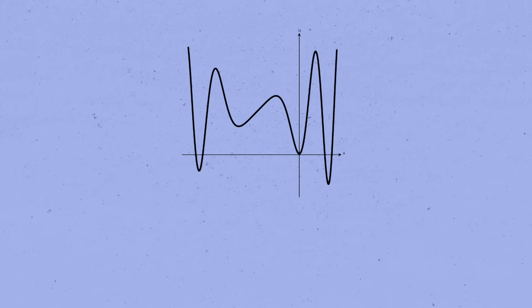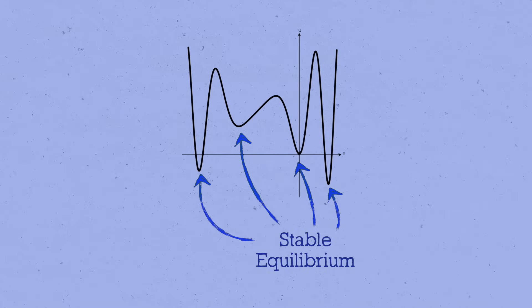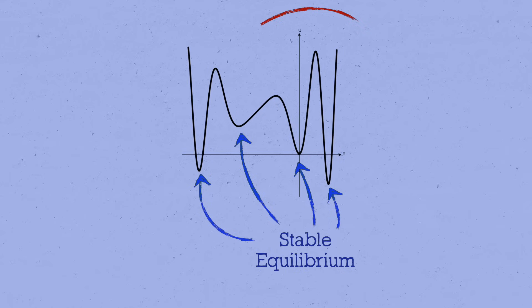Well, the first thing you should do when someone hands you a potential energy curve is to identify its stable equilibrium points. An equilibrium is again a point where the force on the particle vanishes, and so the slope of the potential will be zero there. A stable equilibrium point is one that's at the bottom of a well, as opposed to the top of a hill.